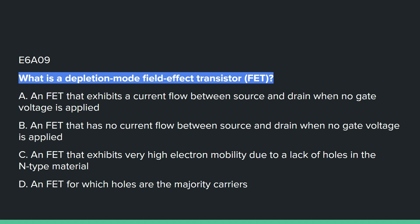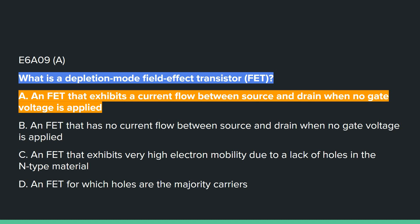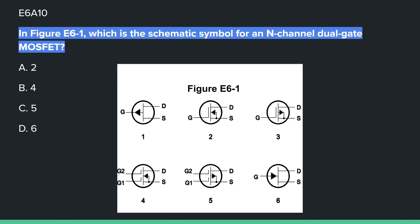E6A09: What is a depletion mode field effect transistor? A, an FET that exhibits a current flow between source and drain when no gate voltage is applied. E6A10: In figure E6-1, which is the schematic symbol for an N-channel dual gate MOSFET? The correct answer is B, which is figure 4.